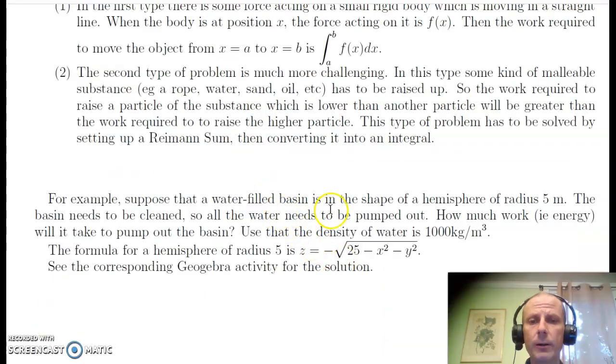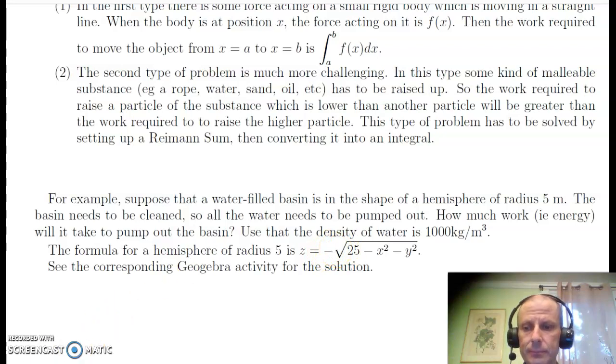For example, suppose we've got a water-filled basin, and it's the shape of a hemisphere of radius five meters. We're just going to imagine that they've got to clean the basin out, so all the water needs to be pumped out. How much work will it take to pump out the basin? We do need to know the mass of the water, and we can get that by using the density of water is 1,000 kilograms per meter cubed. If we know the volume of some amount of water, we can calculate its mass by multiplying the volume by the density. Furthermore, we're going to use the formula for a hemisphere of radius five: z equals minus the square root of 25 minus x squared minus y squared. We have this minus because we want the bottom half of a sphere so that it will hold water.